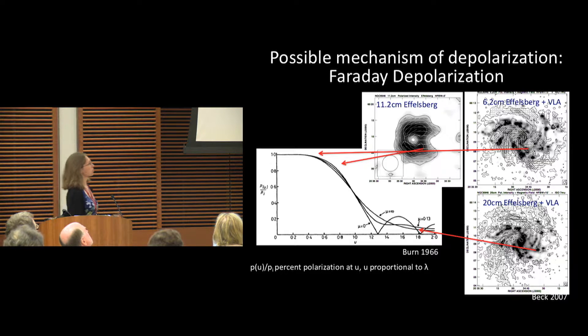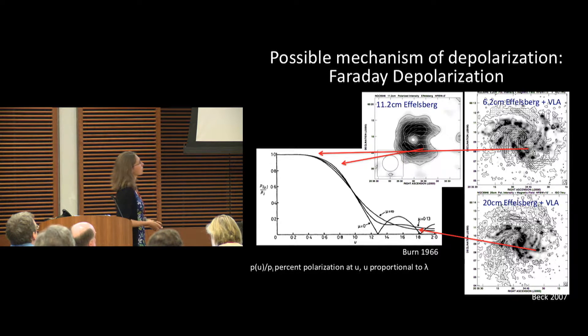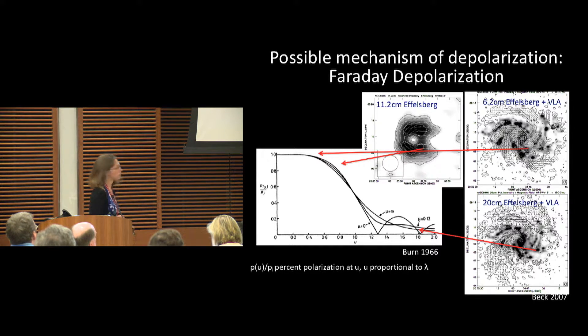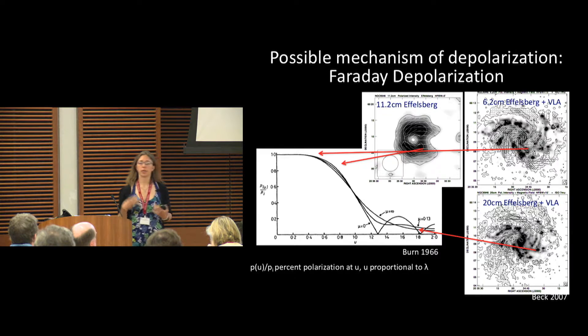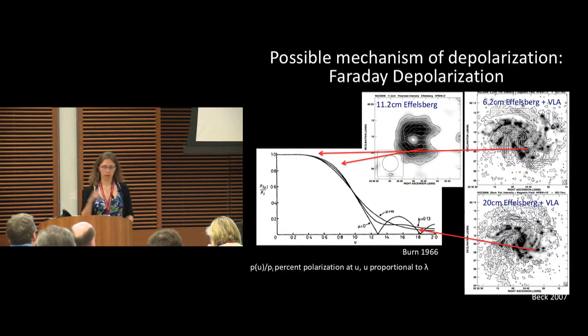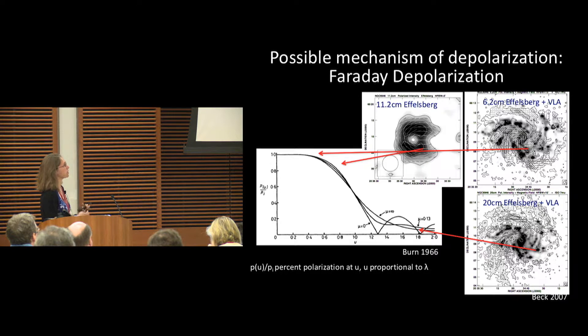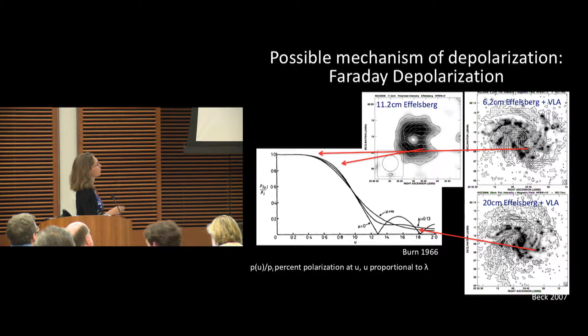One possible way that you can get depolarization is with Faraday depolarization. If you have an emitting and a rotating slab of magnetized mediums, you can get a polarization spectrum that looks something like this, depending on the magnetic field structure.